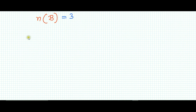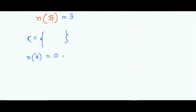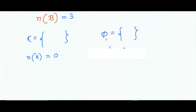The cardinal number of an empty set — suppose a set k has no members — so n(k) is equal to 0, meaning nothing. Normally the empty set is represented by phi (φ). So φ equals nothing. n(φ) is equal to 0.